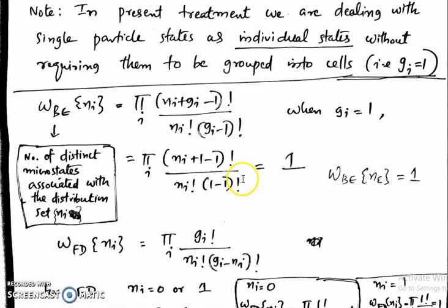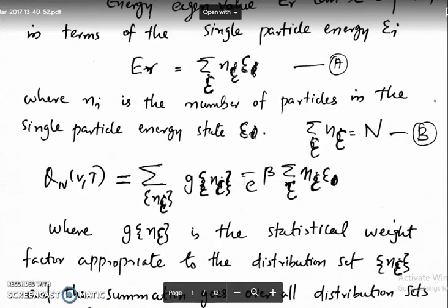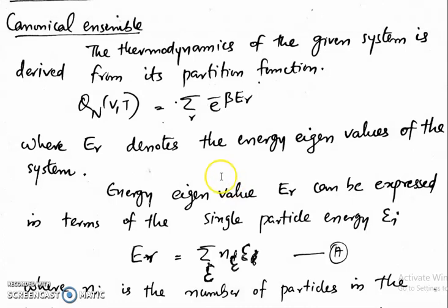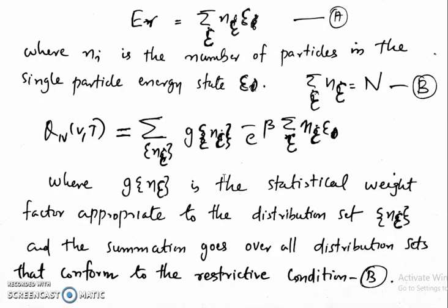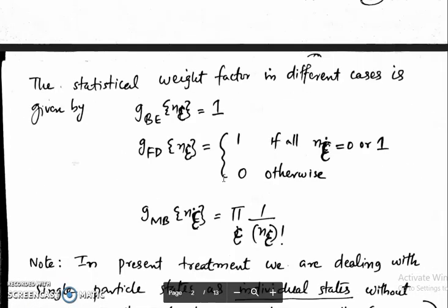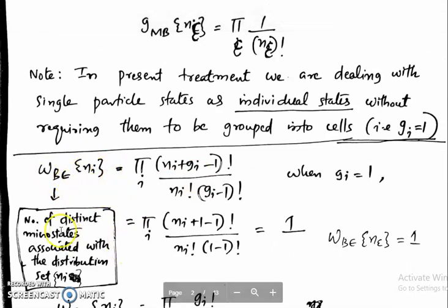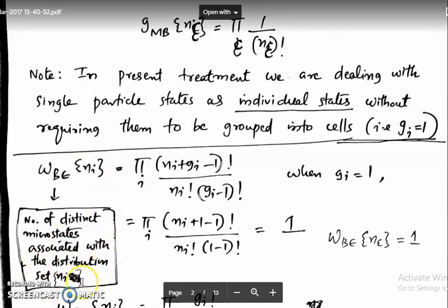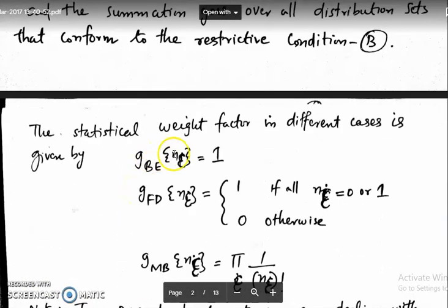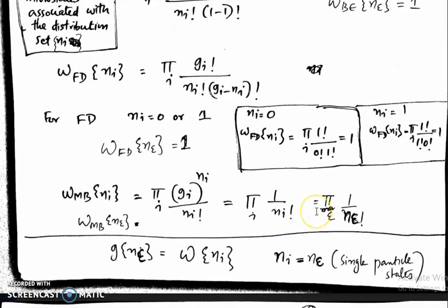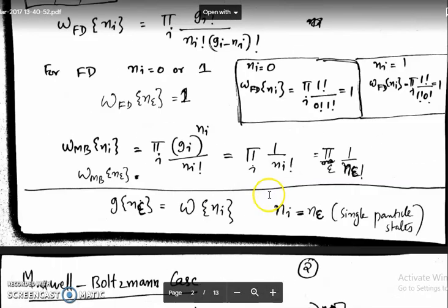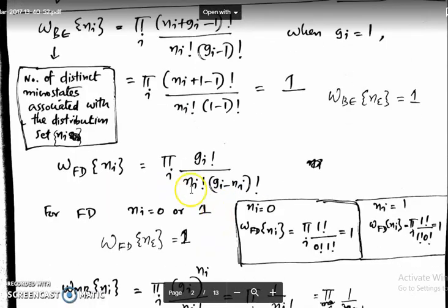So the main idea is: instead of grouping single particle states into several cells, we are now considering individual single particle states. Setting g_i equal to 1 in the earlier formulas gives the number of distinct microstates associated with a distribution set n_epsilon. These two formulations are actually the same — the only difference is we are considering n_i equal to n_epsilon and g_i taken as 1.